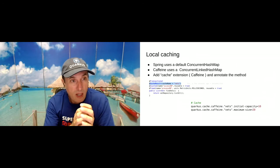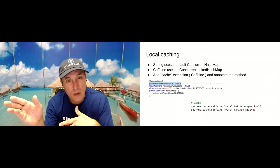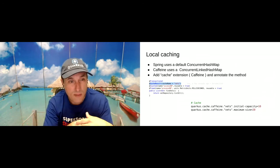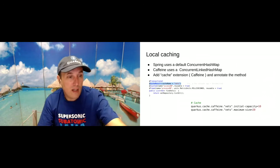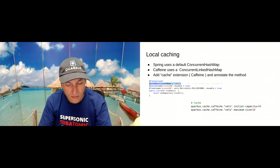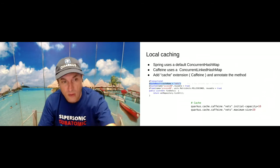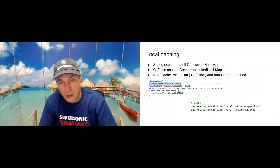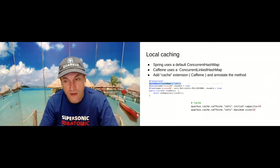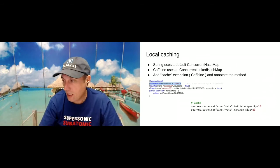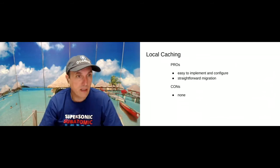Regarding local caching, it's very similar. Spring uses ConcurrentHashMap and Caffeine uses ConcurrentLinkedHashMap, but it's about adding the extension and replacing the annotation — I think in Spring it's @Cache and in Quarkus it's @CacheResult. You specify which is the cache, and in the properties you can set different properties for each cache like initial capacity, maximum size, and others. It was very, very easy to migrate local caching.